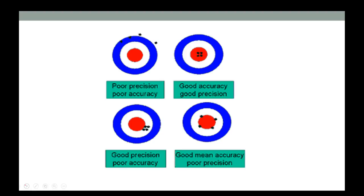When talking about precision and accuracy, a bullseye analogy is often used. If the goal is to hit the center, this target shows good accuracy and good precision — all four arrows are close to each other and close to the center. The next one has good precision because the arrows are close together, but it's not good accuracy.